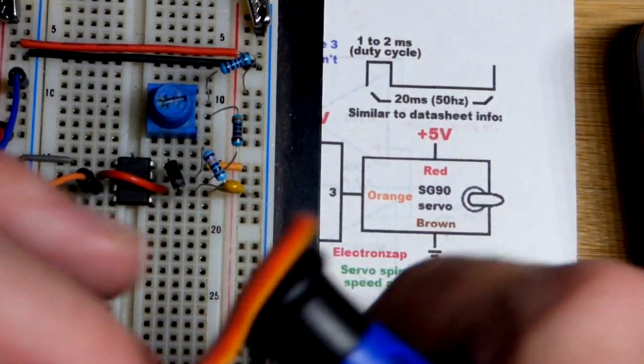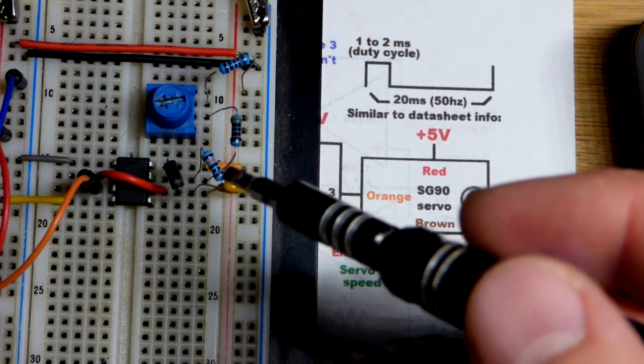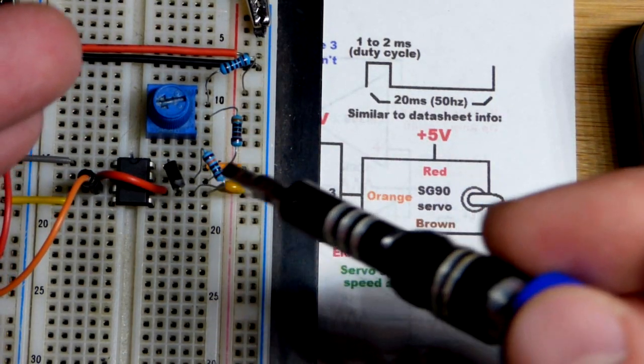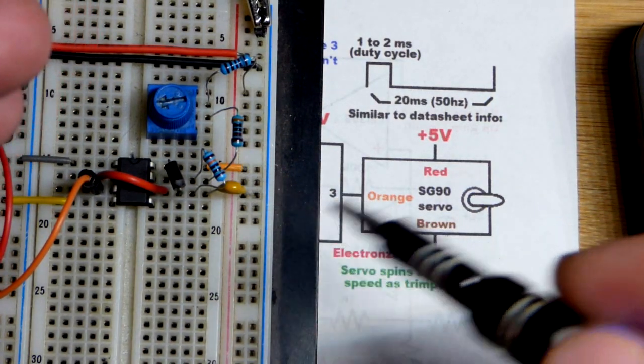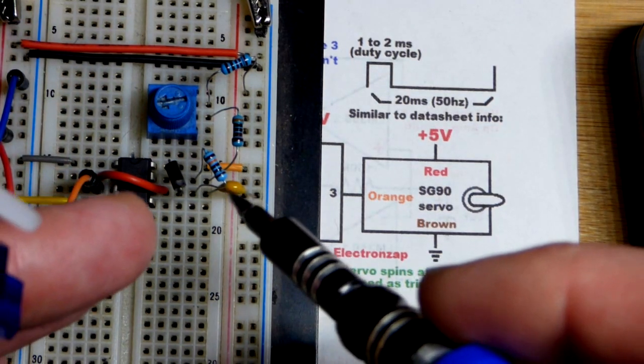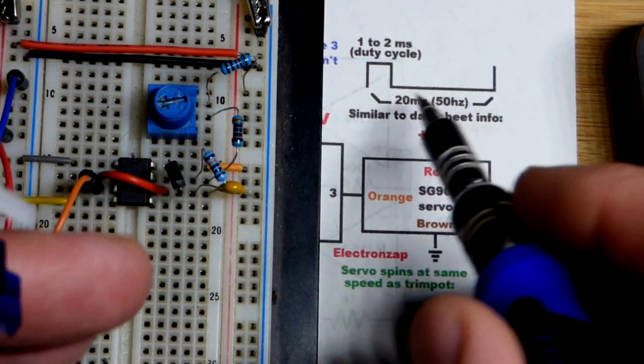When it comes to the position, with the 555 timer it's really easy to have a different timing for the capacitor to charge, which is when the output is high, versus when the capacitor is discharging, which is when the output is low.